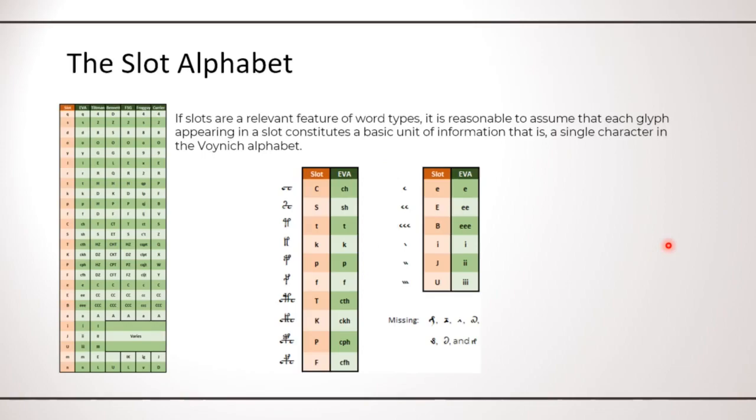What I've shown so far suggests that slots are relevant for the structure of word types. If so, it is reasonable to assume that each glyph that appears in a slot is a basic unit of information. In other words, it's a single character in the Voynich alphabet. This brings me to propose a new transliteration alphabet, which I show in this table, and which for a clear lack of imagination, I call the slot alphabet.